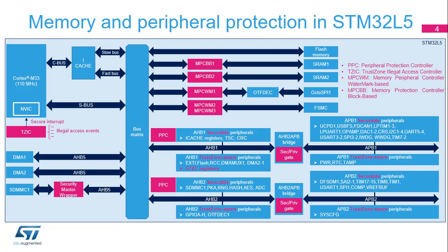This figure highlights the various security mechanisms present in the STM32L5 that are controlled by the GTZ-C. MPC-BB1 and 2 set the secure attribute of SRAM1 and SRAM2 blocks. MPC-WM1, 2 and 3 define the secure address ranges in the external memories accessible from OctoSPI1 and FSMC. PPC assigns secure and privileged attributes to AHB-APB securable peripherals and also checks the permissions. The security master wrapper assigns the security attribute to the SDMMC-1 master. As DMA is a TrustZone Aware IP, it does not require any external wrapper.